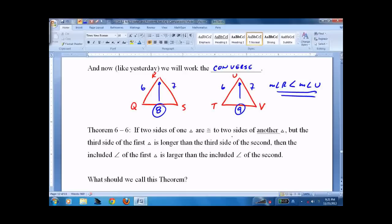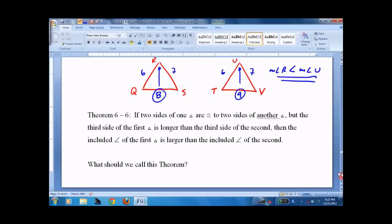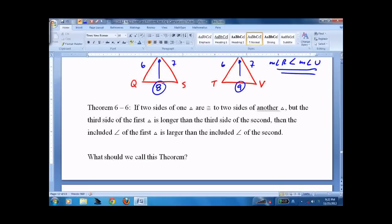Two sides are congruent to two sides of another, third side is longer, concluded angle of the first is larger. But the fun part, what do you want to call it? We're looking at three sides. Yep, you probably figured it out. SSS inequality.